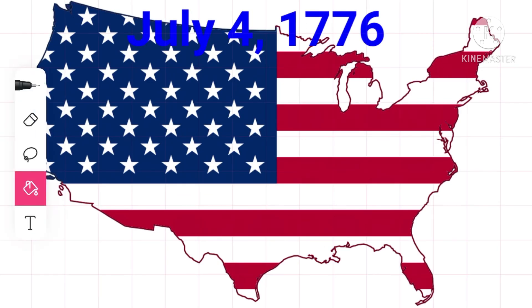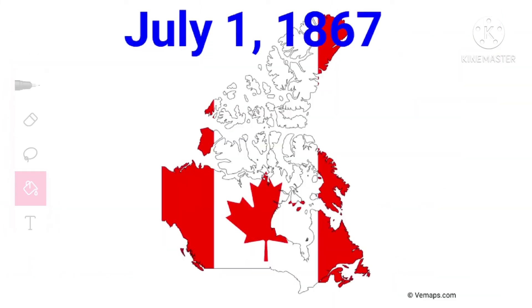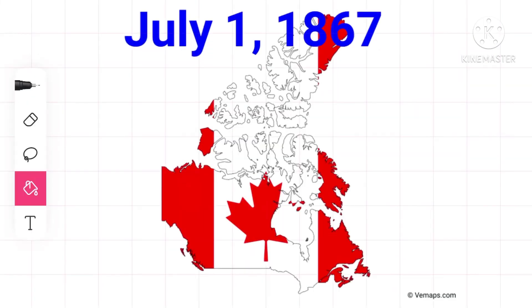USA became a country on July 4th, 1776. Canada became a country on July 1st, 1867.